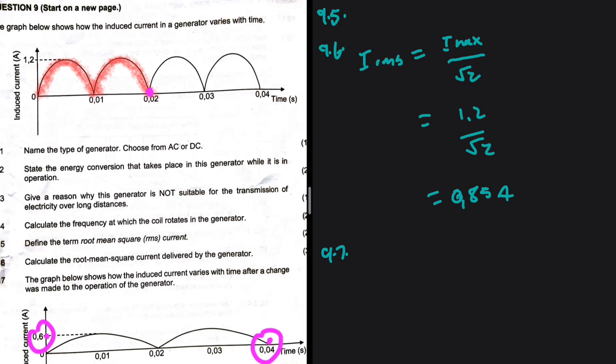That's why it takes twice as much time to complete one cycle. And what are you guys saying about the current induced? It was 1.2, now it is 0.6. Let's go.